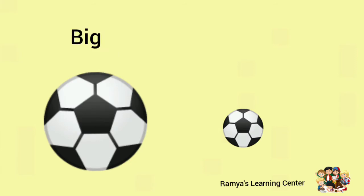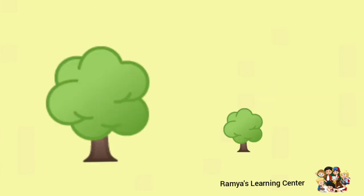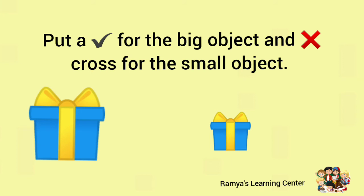In this picture, the first ball is big and the second ball is small. Then here, bus and car — the bus is big and the car is small. Here we have two trees: the first tree is big and the second one is small.